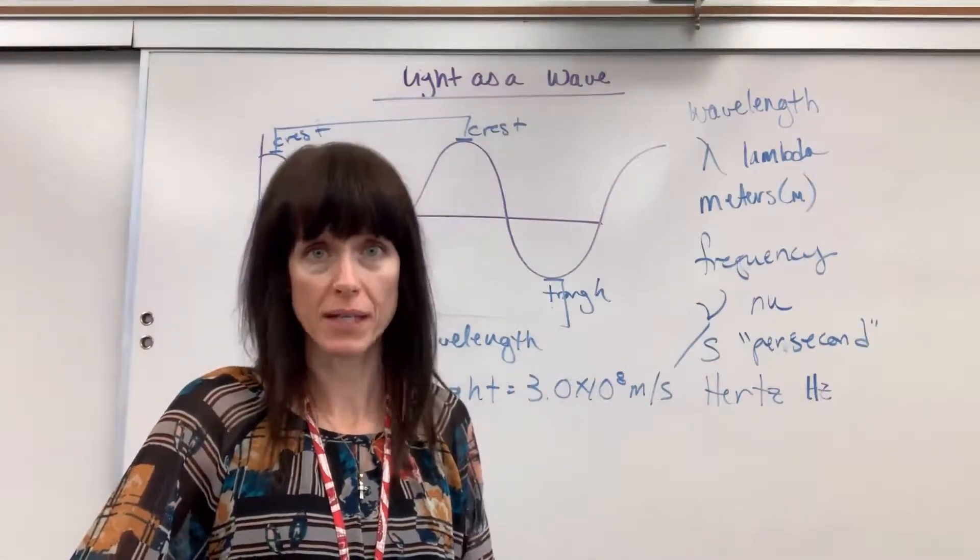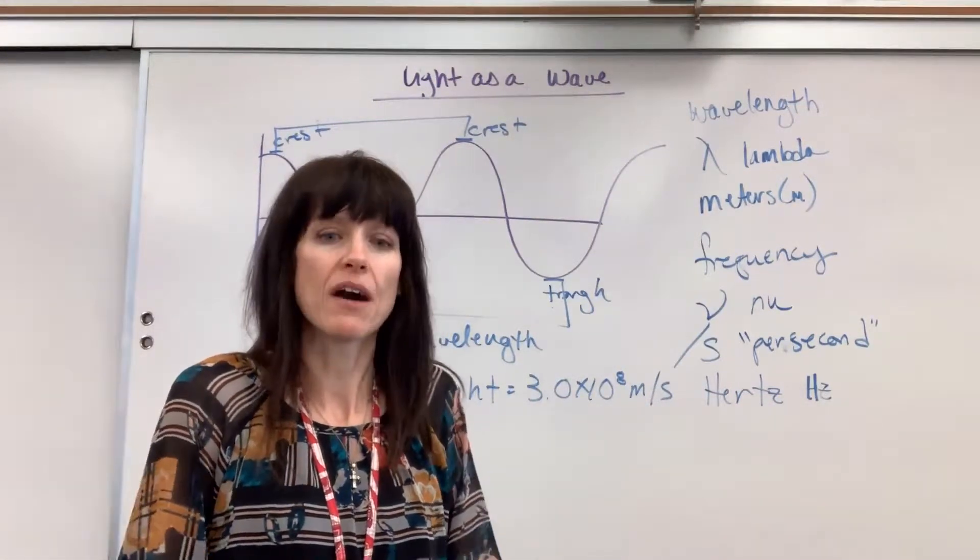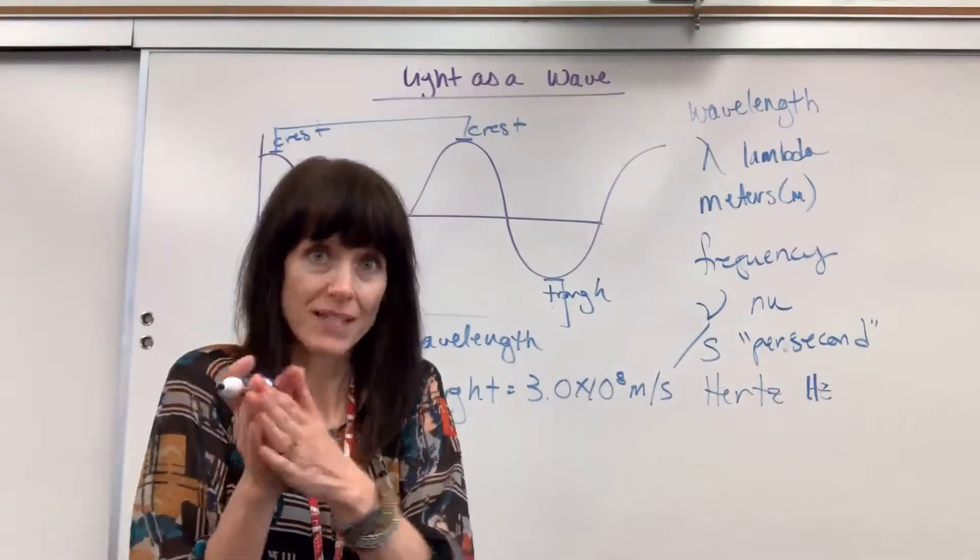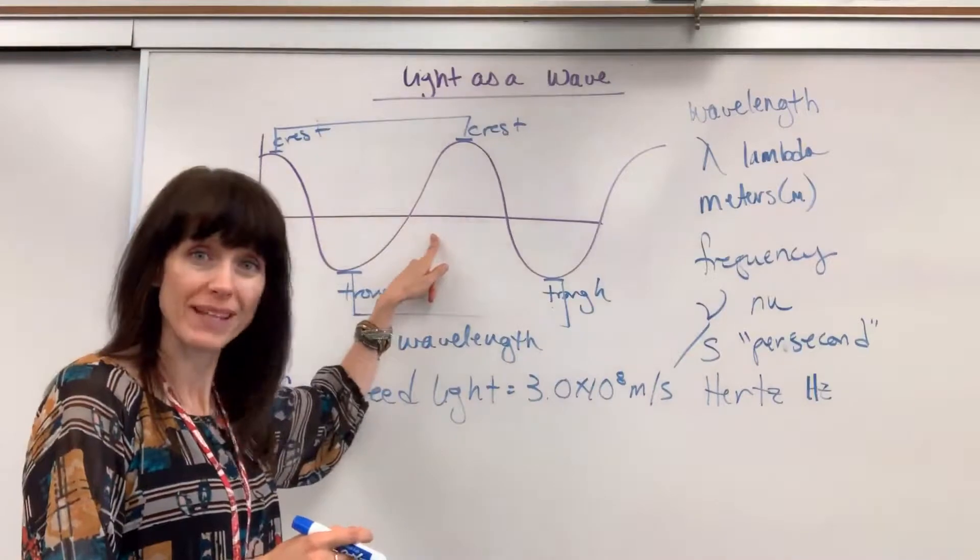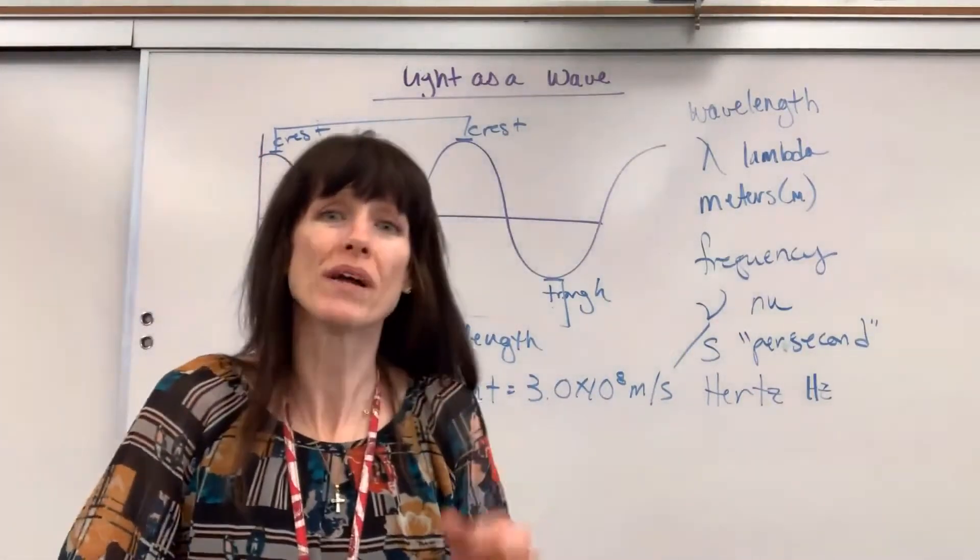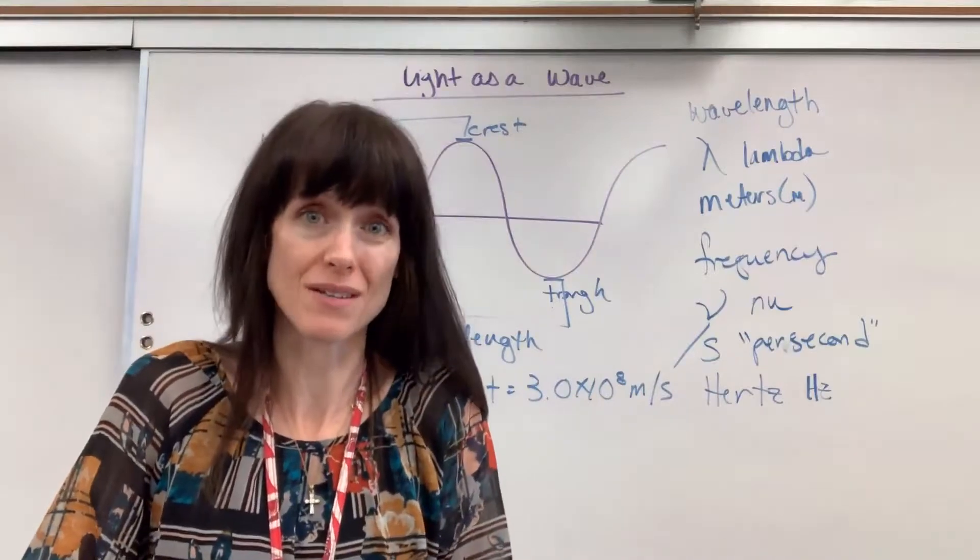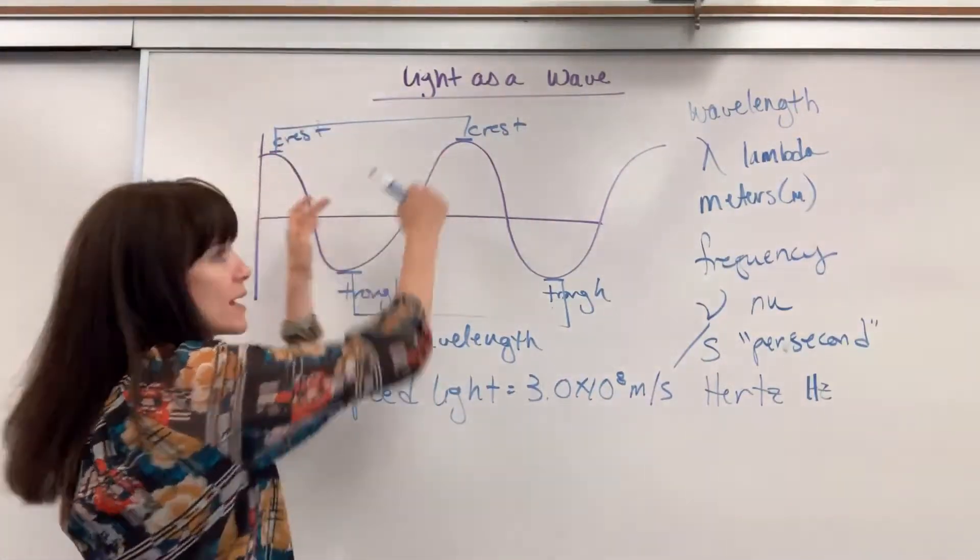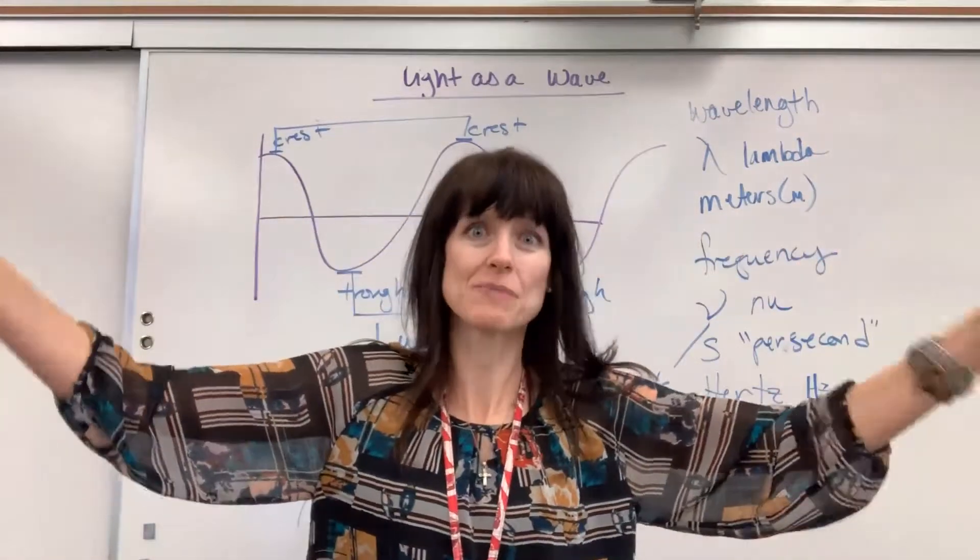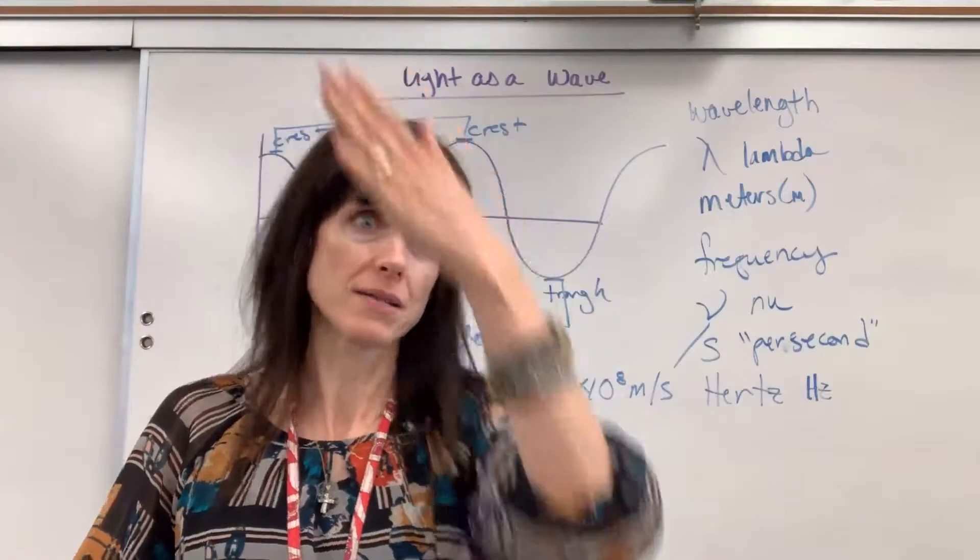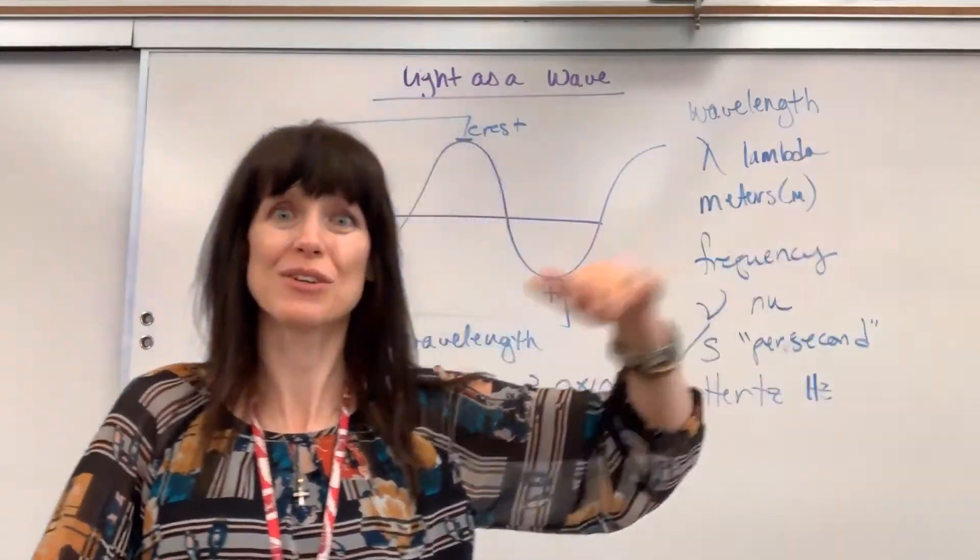You're already familiar with the electromagnetic spectrum. That we have gamma rays all the way to radio waves. Now the gamma rays have very, very small wavelengths. Teeny, teeny, tiny. From crest to crest, it can be 1 times 10 to the minus 15 meters. Super small. Now the radio waves from crest to crest, huge. They can be as big as a football field. They can be in the miles from crest down back up to crest.